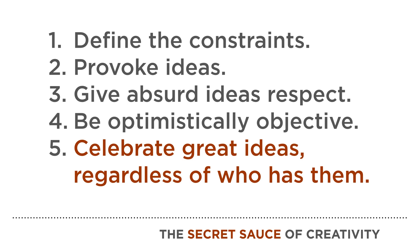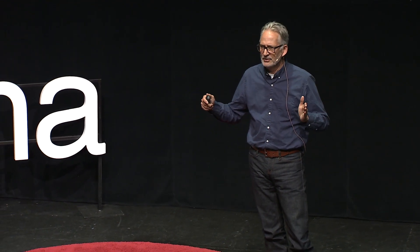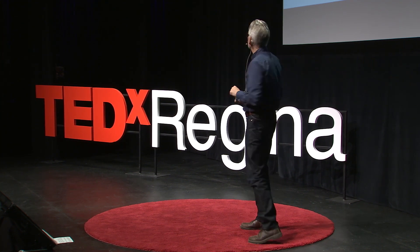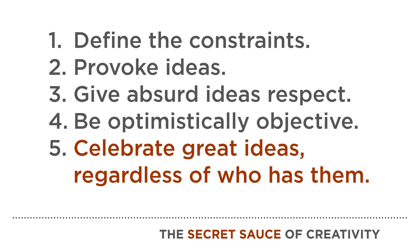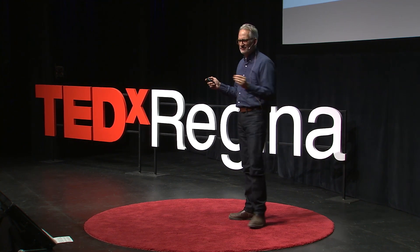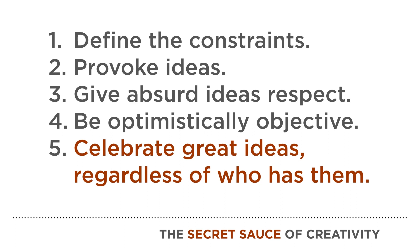So just to quickly conclude, the five things I've learned: number one, define the constraints — know the parameters you're working within; they can actually guide you toward a creative solution. Number two, provoke ideas — don't wait for them; make outlandish suggestions. Number three, give those absurd ideas respect — say okay, restaurant with no food, we're going to let this happen and talk it through. Number four, be optimistically objective — look at possibilities with the notion that it might work, because there's no creative value in being cynical. And lastly, celebrate great ideas regardless of who had them — that's the secret sauce of collaborative creativity.